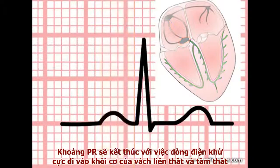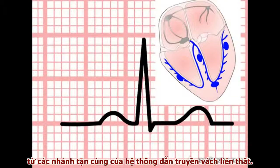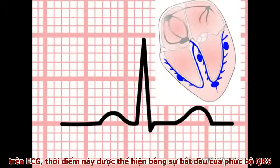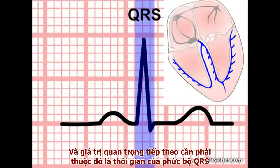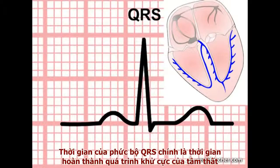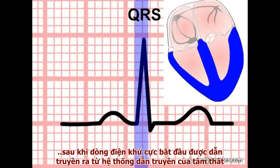The PR interval ends with the release of current into the main muscle mass of the septum and ventricles from the terminal branches of the intraventricular conducting system. On the ECG, this point is marked by the onset of the QRS complex, and the next key value we need to learn is the duration of the QRS complex. The duration of the QRS complex represents the time taken for ventricular depolarization to be completed following the release of depolarizing current from the conducting system.